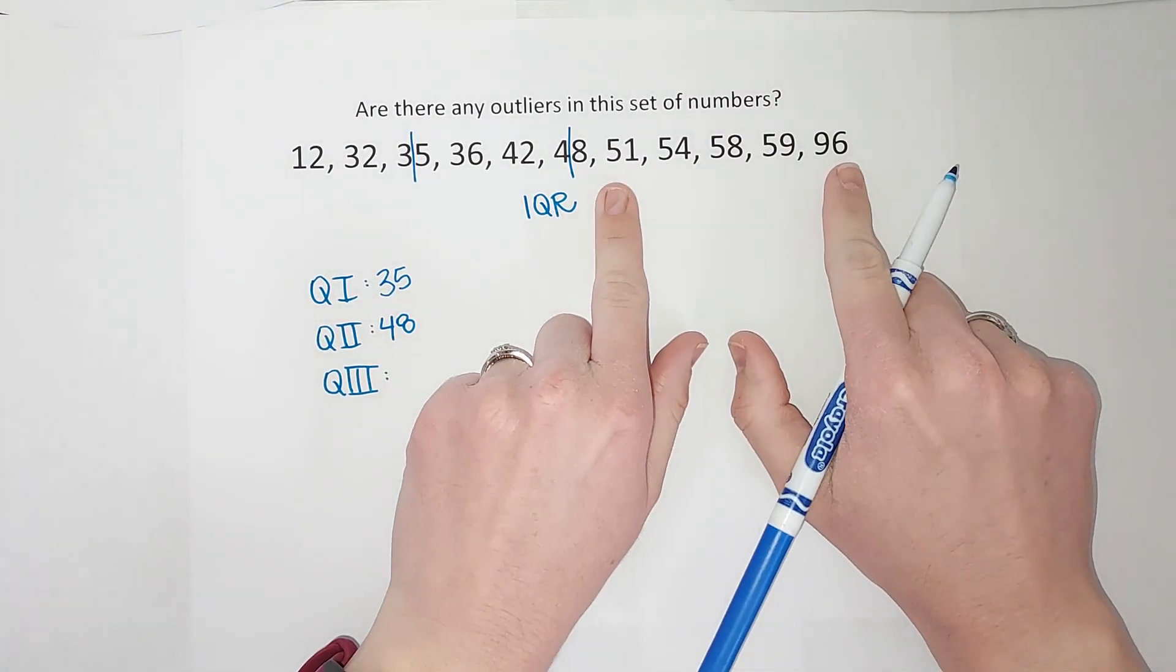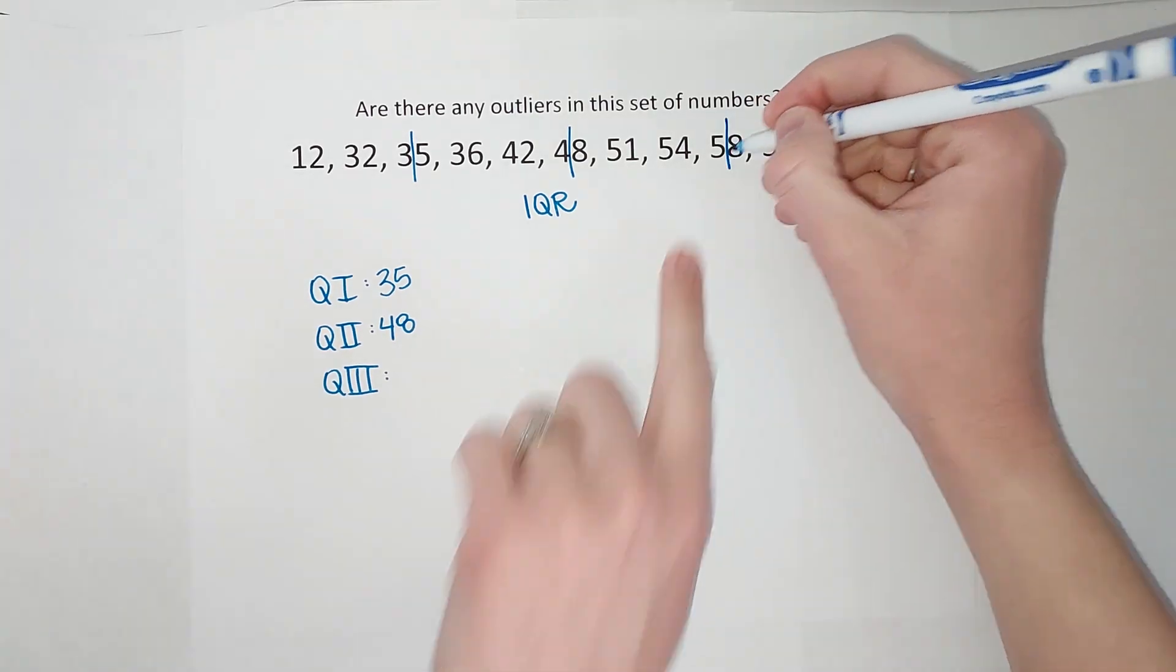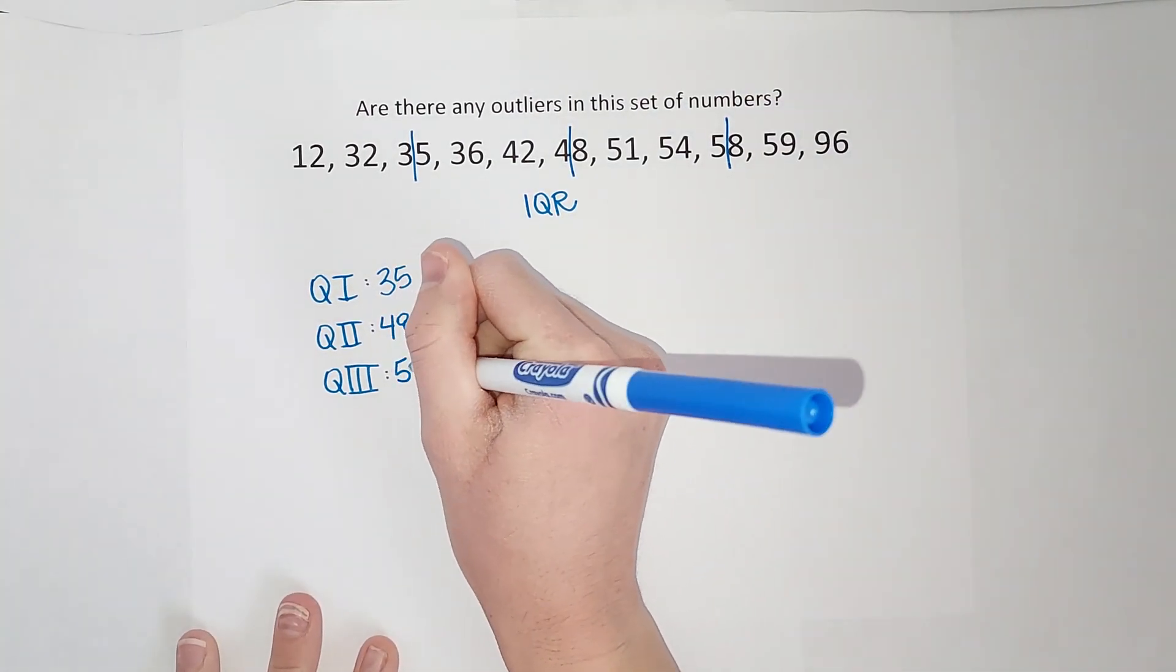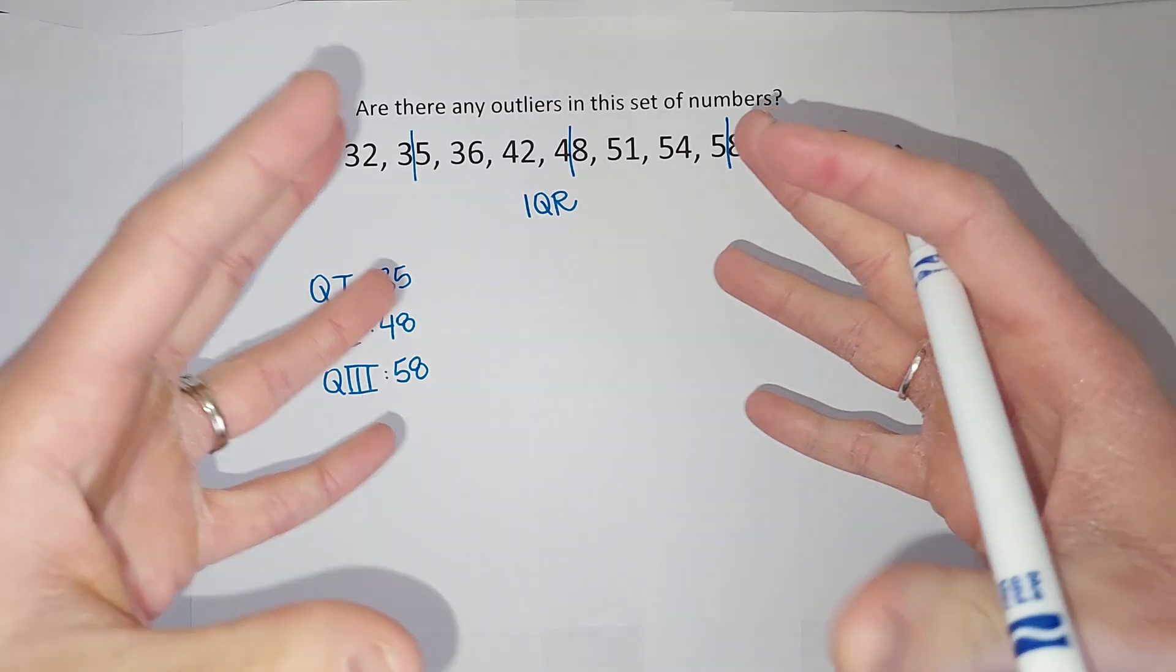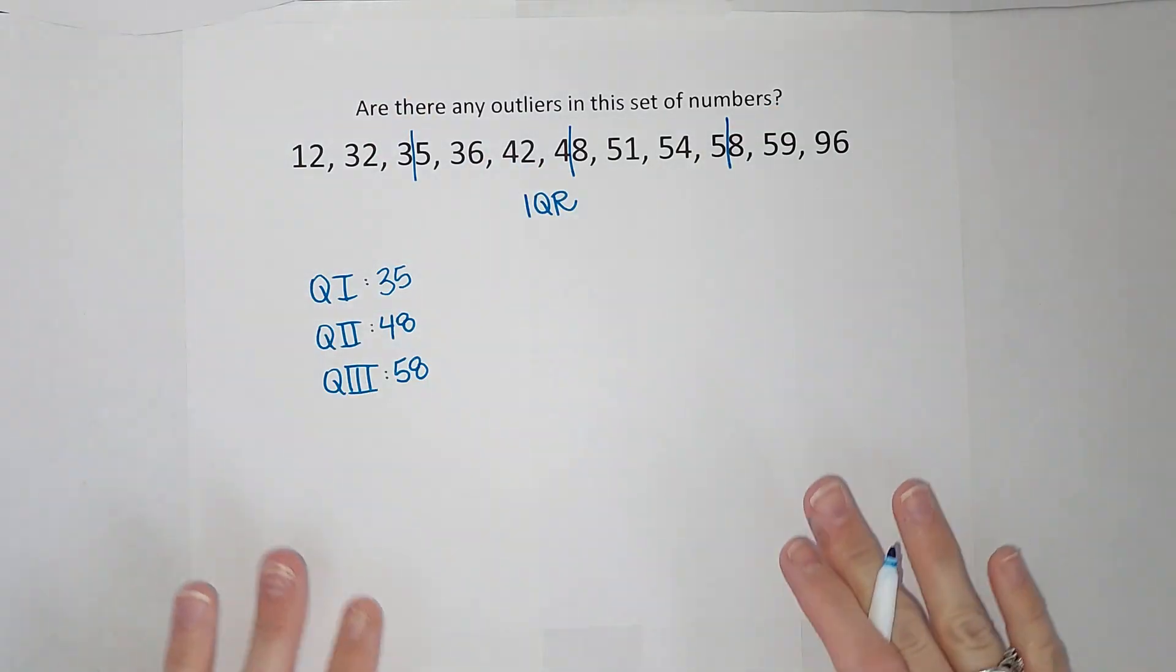And then for my third quartile, we're going to take the middle of this. So it is 58. Remember, if there's ever, if the middle is two numbers, you add them and divide by two. Find their average.